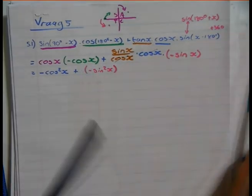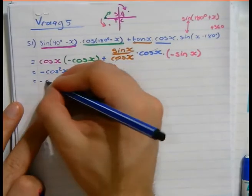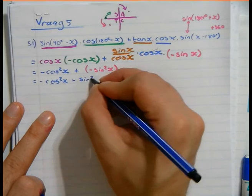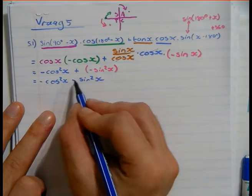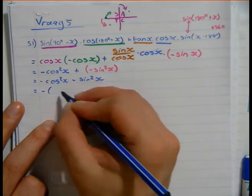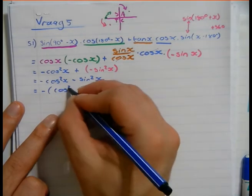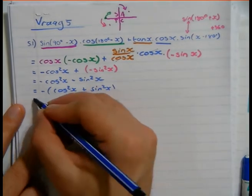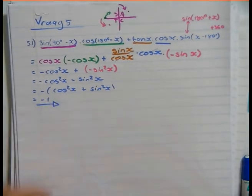Okay, positive times negative is negative sin squared x. I can take out the negative, so I have cos squared x plus sin squared x, and this gives me 1, so I have negative 1.